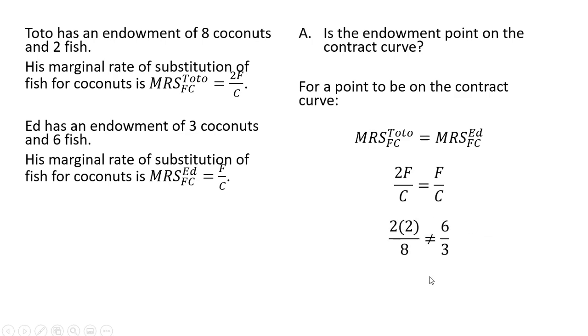If you do that, you'll see that the marginal rate of substitution for Toto does not equal the marginal rate of substitution for Ed. Four divided by eight is one-half, and six divided by three is two. So we can conclude that this initial endowment point is not on the contract curve. All right, that's it.